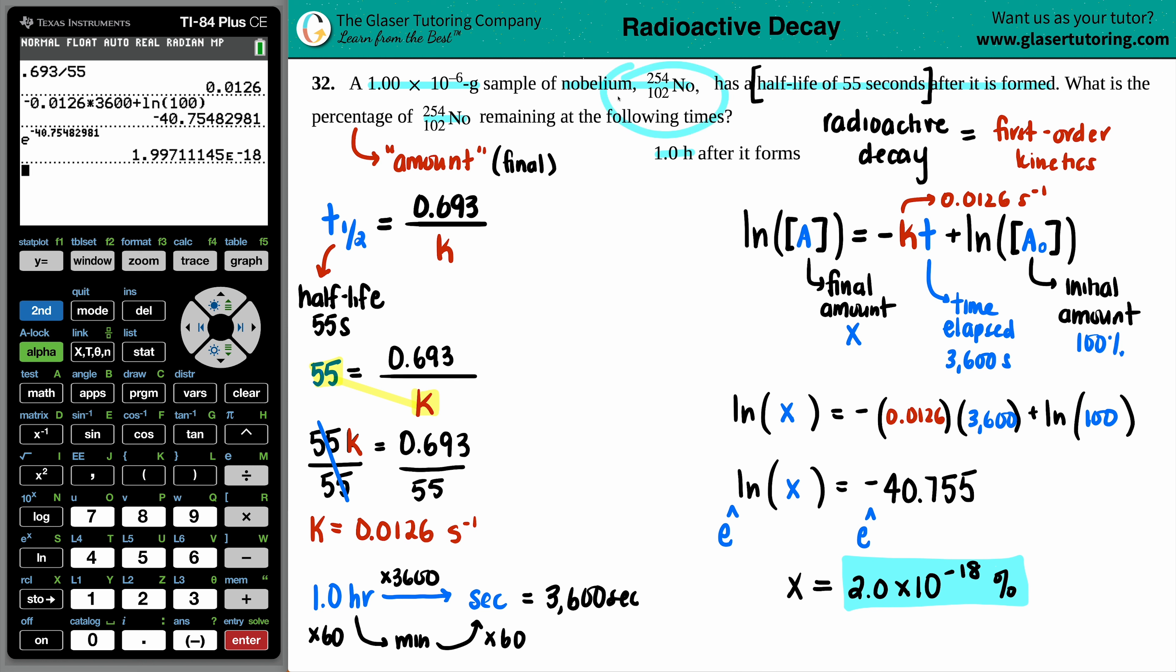So that means that after one hour you will have basically no more nobelium. This will all get converted into that stable isotope. And it makes sense - your half-life is only 55 seconds, which means that every 55 seconds your sample breaks in half. So you need a lot of half-lives to get to one hour, so it makes sense that there's basically nothing left.